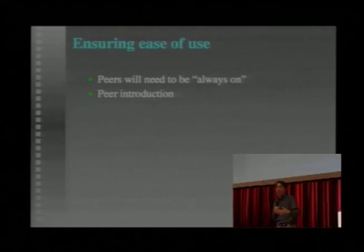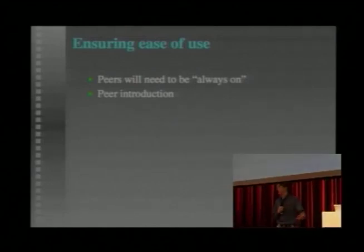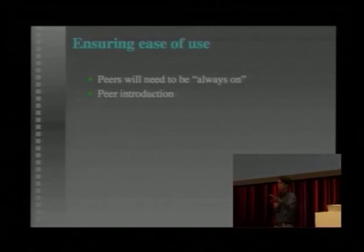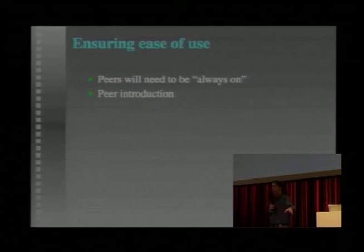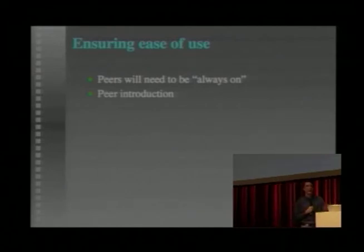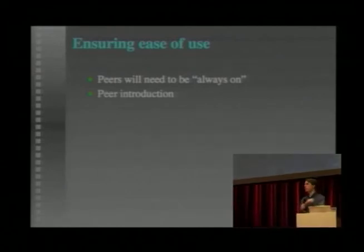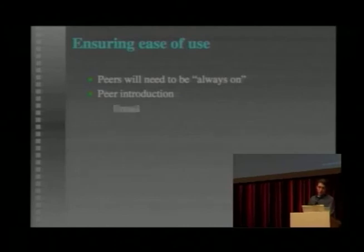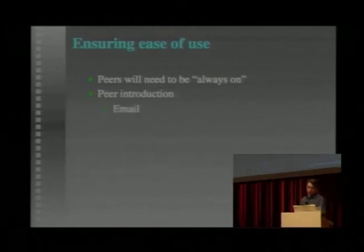So that they can recognize each other and to make port scanning for Freenet nodes more difficult. But this is basically a block of, to most people, unintelligible data that they need to exchange with each other and then somehow tell their Freenet nodes about. How do we make that happen in as painless a way as possible? Do we encourage people to send it by email and then cut and paste? That's one of the usability challenges we're looking at.